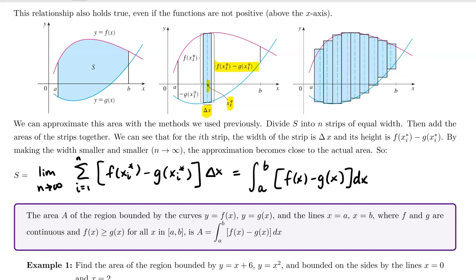The area A of the region bounded by the curves y equals f of x and y equals g of x, and the lines x equals a and x equals b, where f and g are continuous and f of x is greater than or equal to g of x for all x in the closed interval from a to b, is given by: A equals the definite integral from a to b of f of x minus g of x dx.